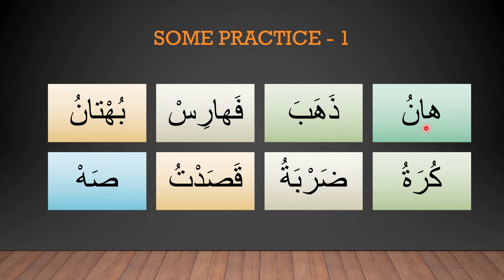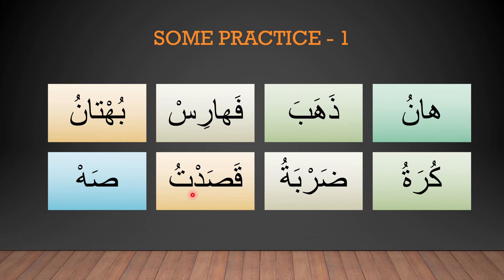Second time through the practice: Ha-alif: Ha. Noon-damma: Nu. Ha-Nu. Thal-fatha: Da. Ha-fatha: Ha. Zaha. Ba-fatha: Ba. Zaha-ba. Fa-fatha: Fa. Ha-alif: Ha. Fa-Ha. Ra-kasra, sin-sukun: Ris. Fa-Ha-ris. Ba-damma, Ha-sukun: Buh. Ta-alif: Ta. Buh-ta, noon-damma: Nu. Buh-ta-nu. Ra-fatha: Ra. Kura. Ta-marbuta, ta-damma: Tu. Kuratu. Ba-alif-ra-sukun: Dar. Ba-fatha: Ba. Darba. Ta-damma: Tu. Darbatu. Qaf-fatha: Qa. Saad-fatha-dal-sukun: Saad. Qasad. Ta-damma: Tu. Qasad-tu.